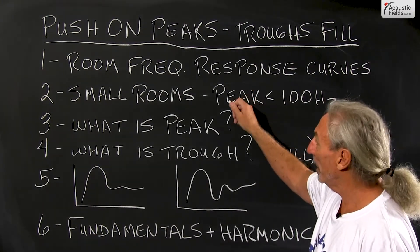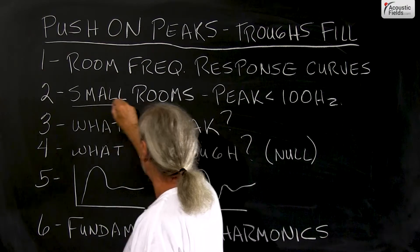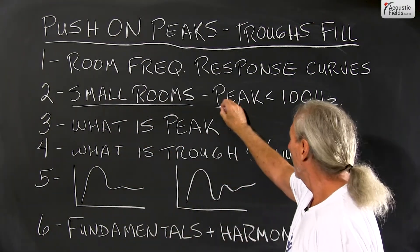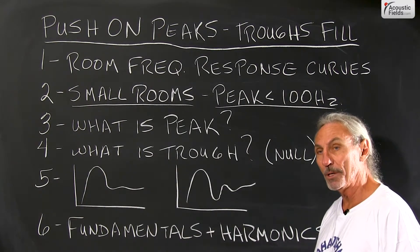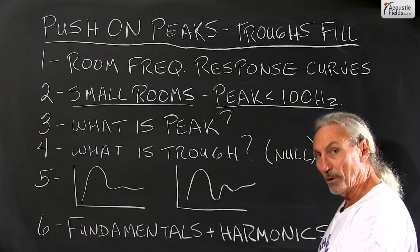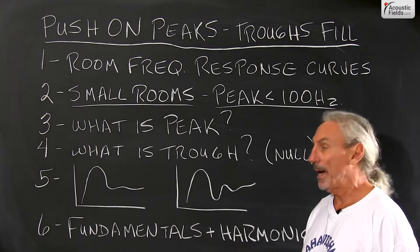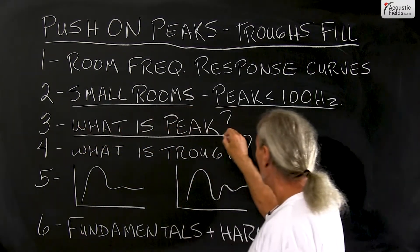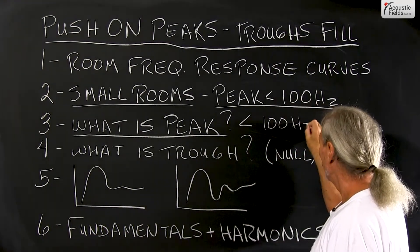So all rooms have what we call a frequency response curve and small rooms unfortunately, which is the ones we have to work in for our music, have characteristics to them. We have a database now of 140 built and measured rooms and if you look at all the response curves in that database you're going to see some patterns. One of the patterns you're going to see is a peak and the peak is always less than 100 cycles in general terms.